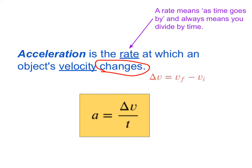And so our formula for acceleration is going to be the change in the velocity, delta v, divided by the amount of time it takes for this to happen. So a will equal delta v over t.